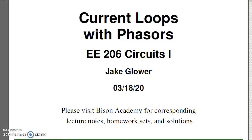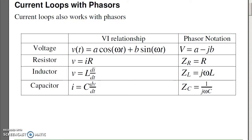Next, look at current loops. Not surprisingly, current loops work with phasors just like it did at DC, except now you're using complex numbers. As a reminder, when you're dealing with phasors, the voltage goes to a minus jb. The real part is cosine, minus j is sine. For resistors, the impedance becomes R, inductors become jωL, capacitors become 1 over jωC.